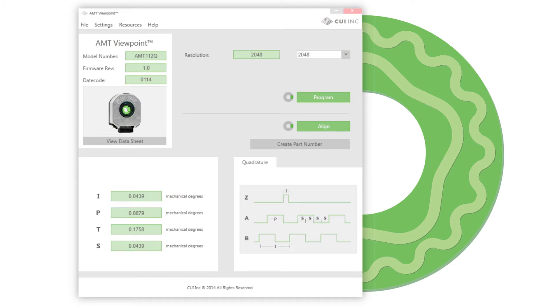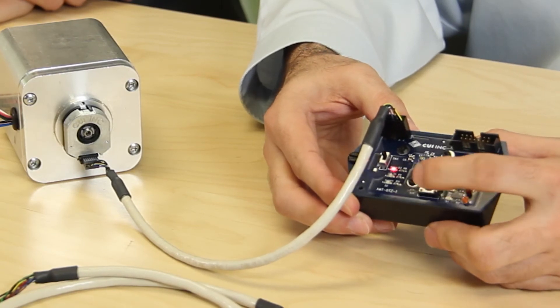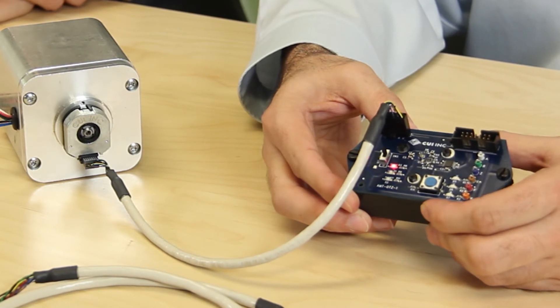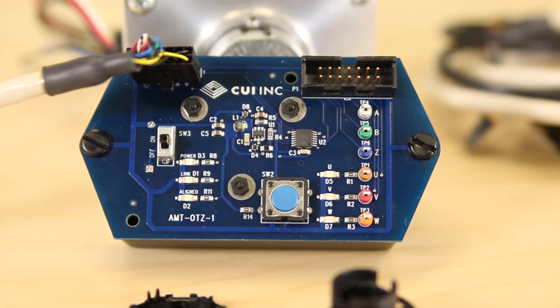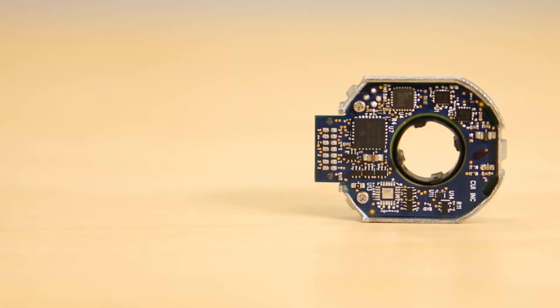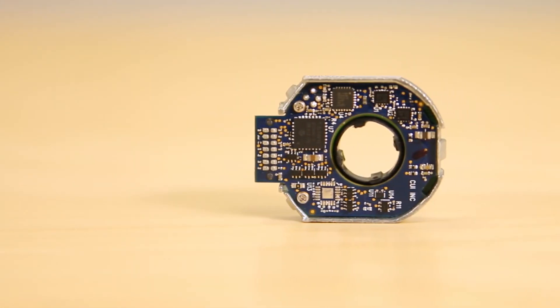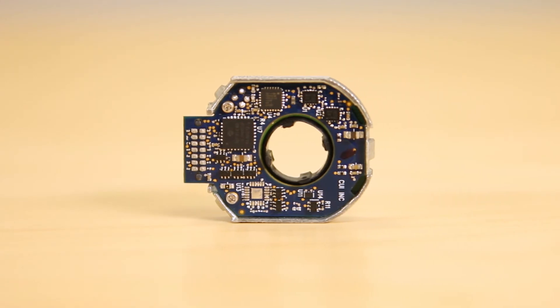So, installing and aligning CUI's AMT31 commutation encoder series doesn't need to slow assembly. Thanks to its one-touch zero module and intelligent AMT viewpoint GUI, the AMT series allows for high visibility and control. Combined with high accuracy and simple assembly, the AMT31 works in a range of industrial, automation, robotics, and renewable energy applications.